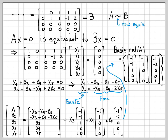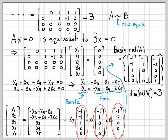So the basis for the null space of A consists of those three vectors: (-1, -1, 1, 0, 0), (-1, 1, 0, 1, 0), and (-1, -2, 0, 0, 1). Now that we have the basis, determining the dimension is trivial — the dimension of a subspace equals the number of vectors in its basis. There are three vectors in the basis, so the null space of A is three-dimensional. That concludes this example: we used the definition of null space, parameterized the solutions using free variables, identified the basis, and found that the dimension (nullity) is 3.